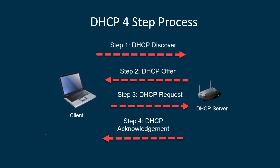Now for some technical pieces of DHCP. Behind the scenes, DHCP goes through a four-step process to get all those IP settings. Your client — say your laptop — wants to connect to the network, so first it's going to send out a DHCP Discover, essentially screaming out 'I need an IP address.'